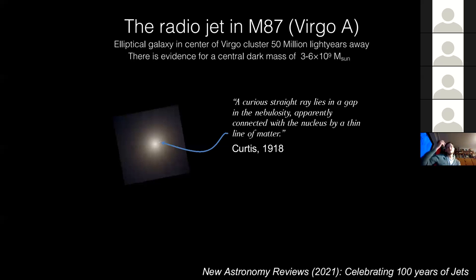The most famous jet, which was also described as a straight ray, is the M87 jet. So our neighbor galaxy in Virgo A. It was described more than 100 years ago by Curtis as a curious straight ray, which lies in a gap within the nebulosity, apparently connected with the nucleus by thin line of matter.